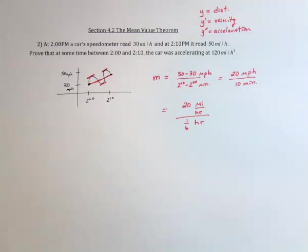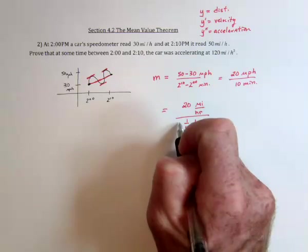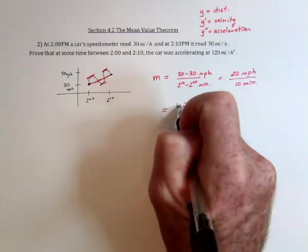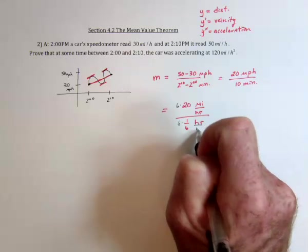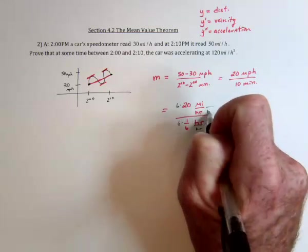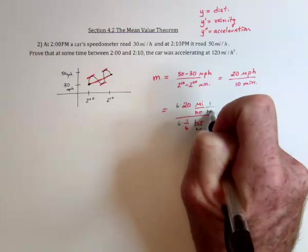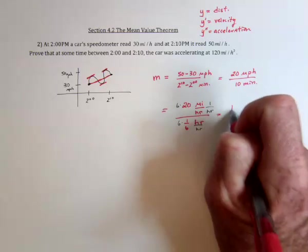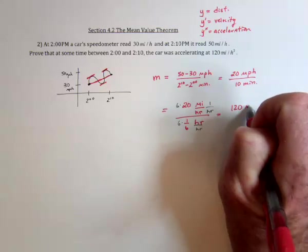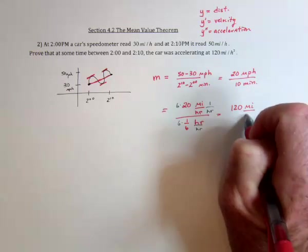And then to finish this, we would need to multiply by 6, and there's the 120. And we would need to divide by hours. And there's the hours squared. So it's 120 miles per hour per hour.